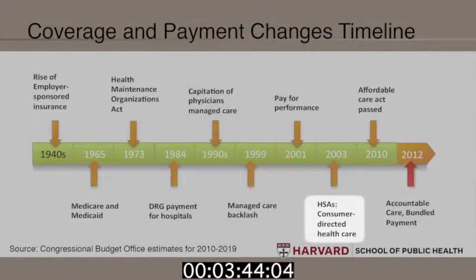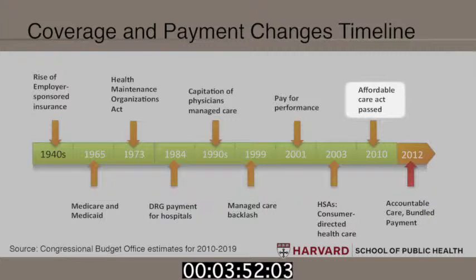Next, there was again a return to some previous ideas that we should do less in terms of getting the delivery system to control costs and instead place more responsibility on consumers. Health savings accounts and consumer-directed health care came into being around 2003 with the Medicare Modernization Act. And of course, we'll talk a lot about the Affordable Care Act of 2010, the goal of which was to essentially universalize access to health insurance and at the same time begin to make systematic changes in the delivery system to provide better value.